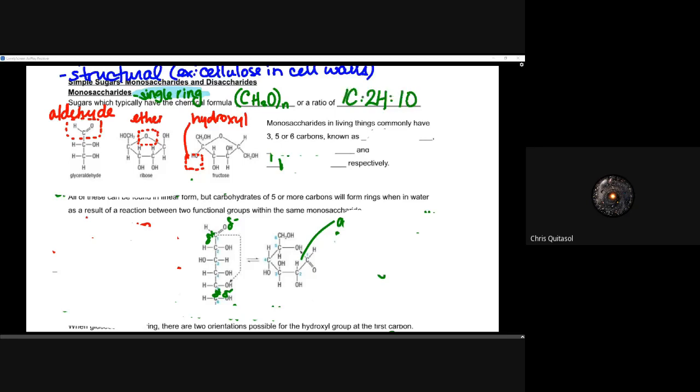When we think about carbohydrates, we need to look at things like simple sugars — specifically mono and disaccharides. Monosaccharide means it's going to be a single ring. Sugars are typically going to have a chemical formula of CH₂O in some combination of those atoms, usually at a ratio of one carbon to two hydrogens to one oxygen.